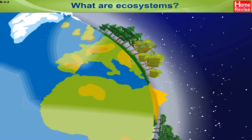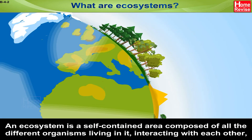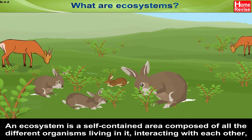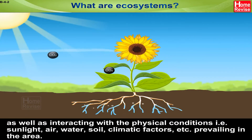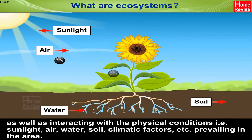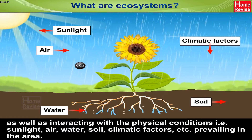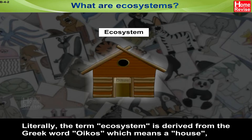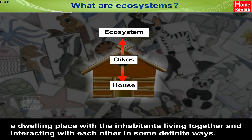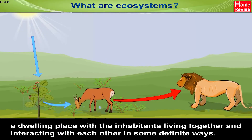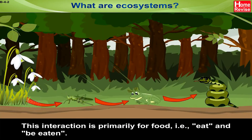What are ecosystems? An ecosystem is a self-contained area composed of all the different organisms living in it, interacting with each other as well as with the physical conditions — sunlight, air, water, soil, and climatic factors — prevailing in the area. The term ecosystem is derived from the Greek word oikos, meaning a house or dwelling place with inhabitants living together and interacting with each other. This interaction is primarily for food — eat and be eaten.